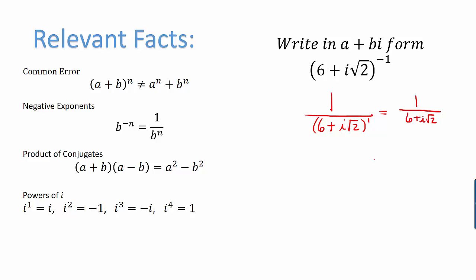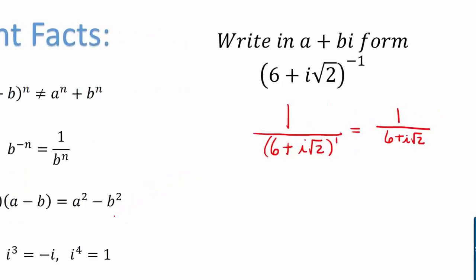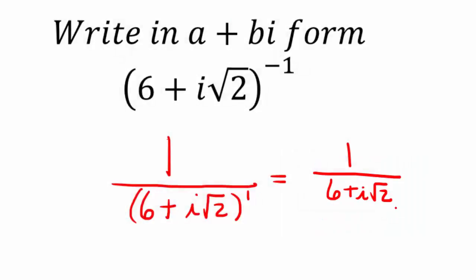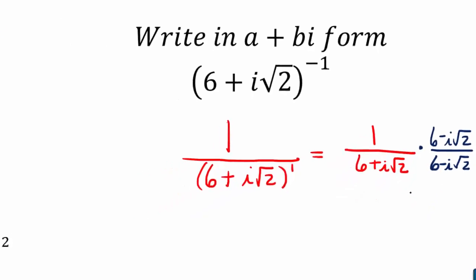Now I'm going to do the little trick we talked about regarding conjugates. Remember, a conjugate is a binomial that has the same two terms as the original but with the opposite sign in the middle. Here we have the binomial 6 plus i root 2. What we would like to do is to multiply it by its conjugate. Of course, we can't just multiply it by its conjugate without changing the value of the fraction. So instead, we're going to multiply both the numerator and the denominator by the conjugate. This way, we're really just multiplying by 1 and we haven't changed the value of the fraction.